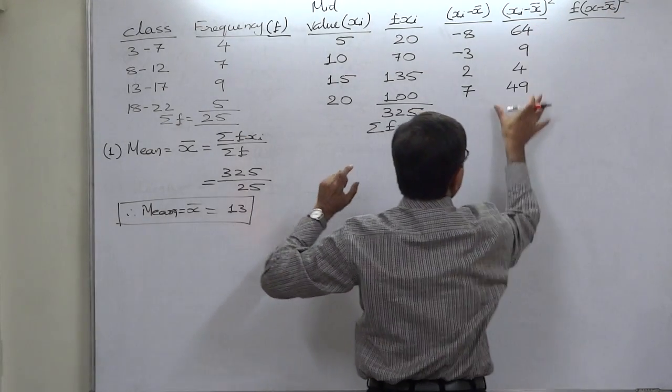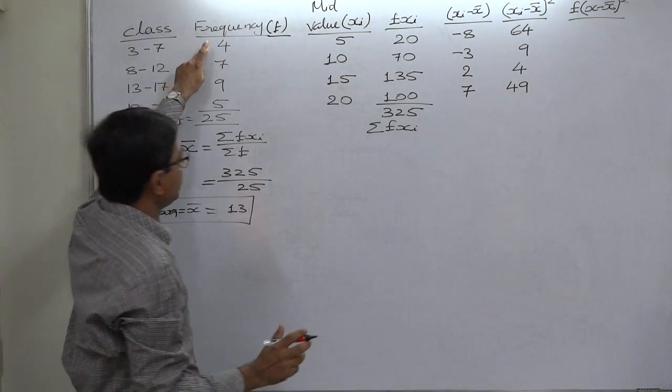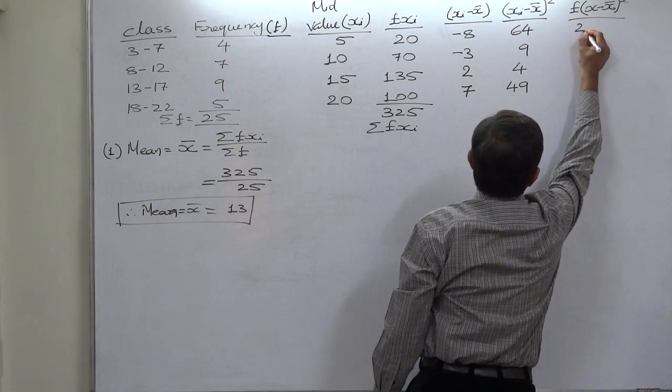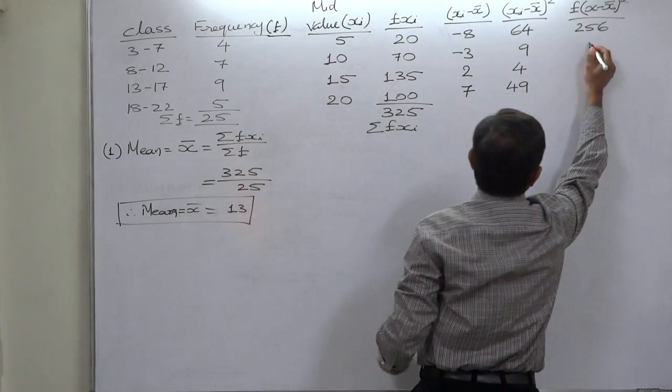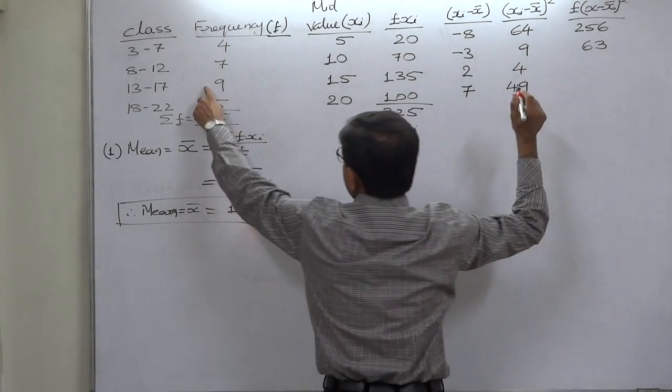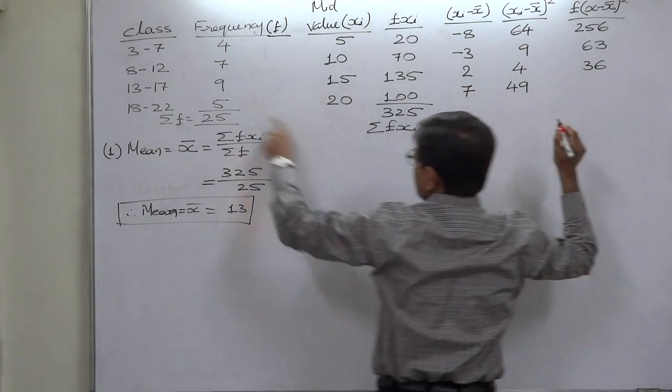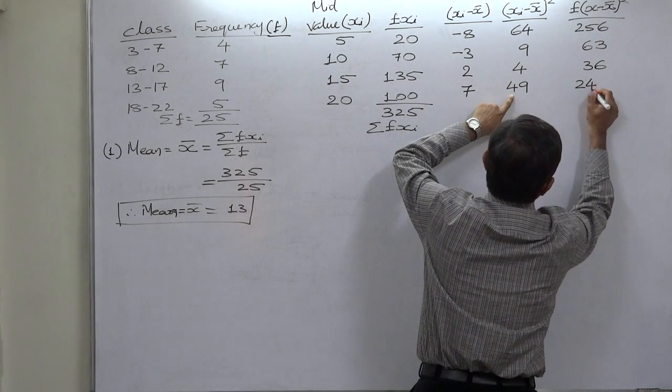Multiply all values of x minus x bar square with the frequency. 4 multiplied by 64 is 256, 7 multiplied by 9 is 63, 9 multiplied by 4 is 36, and 5 multiplied by 49 is 245.